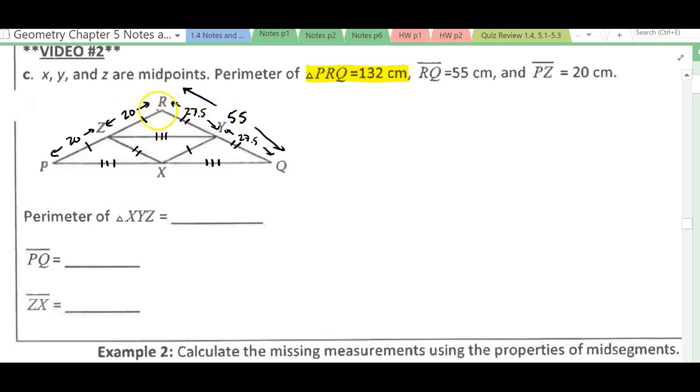So if the large triangle has two of each of these little pieces and the small triangle only has one, then the perimeter of triangle XYZ is simply going to be half of the original triangle, which gives us 66 centimeters.